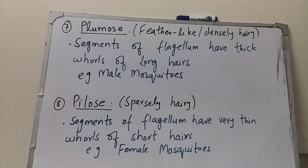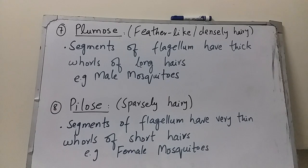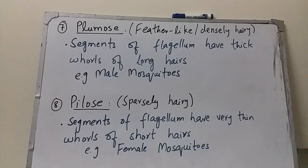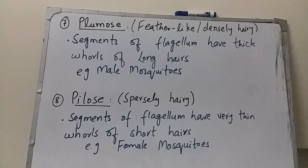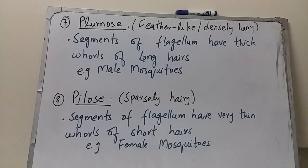The next type is plumose antenna. Plumose means feather-like or densely hairy. In this case, the segments of the flagellum have thick whorls of long hairs — tufts of hair are present at the junctions of segments. Plumose antennae are present in all male mosquitoes.